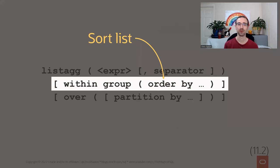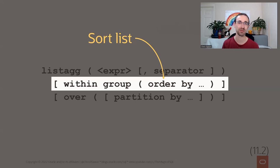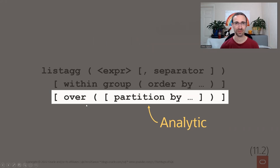There are also a couple of optional clauses. First, the WITHIN GROUP clause, which defines which order the values appear in the list — we can sort them alphabetically or by some other column. This is optional, but like a SELECT statement without an ORDER BY, if you omit it, the database is free to return the values in any order. For consistency and repeatable output, you almost always want an ORDER BY. Next is the OVER clause — like the OVER clause for all analytic or window functions — which converts LISTAGG from an aggregate into an analytic, preserving the result set.